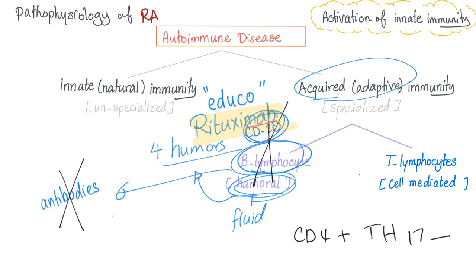How do glucocorticoids work on humoral immunity? They suppress it by inhibiting B lymphocytes' ability to produce autoantibodies. They also suppress cell-mediated immunity by inhibiting T cell proliferation.